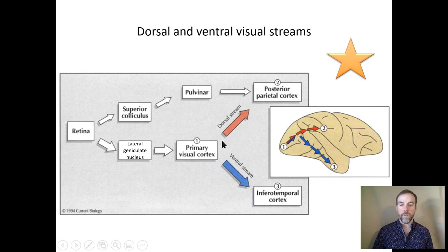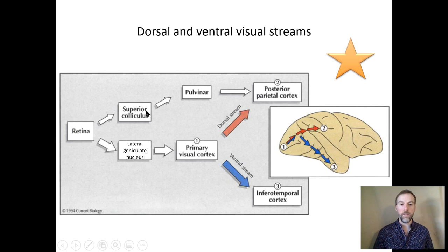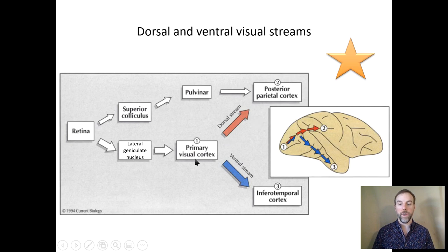Information via the primary visual cortex gets sent both to the dorsal stream and to the ventral stream. When we talked about blindsight, we talked about this subcortical route. Part of the preserved abilities in blindsight are because the subcortical route actually sends information up to the cortex — to the posterior parietal cortex. So there are two ways to get information to the posterior parietal cortex: via the primary visual cortex or via the subcortical pathway.